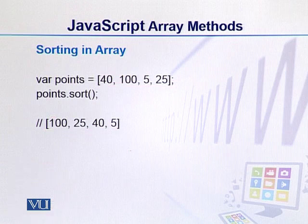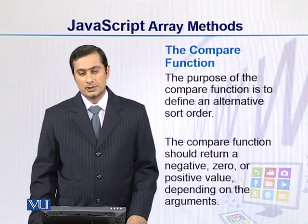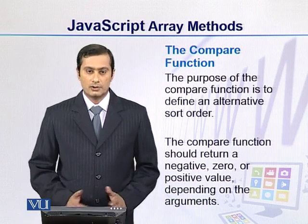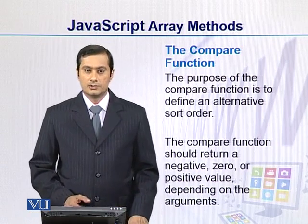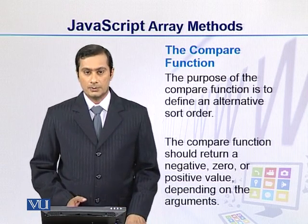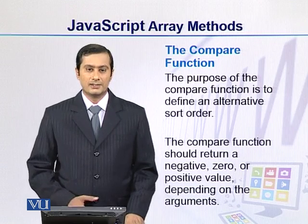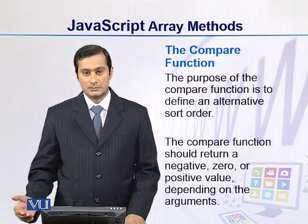We need to understand how sorting works. The sort function uses a compare function. This compare function is used by sort for any array. The compare function returns values as 0, negative, or positive, and on that basis the sort function decides whether to place a value before or after another.